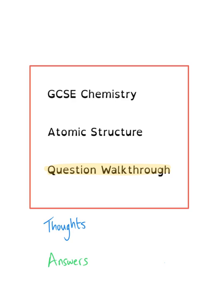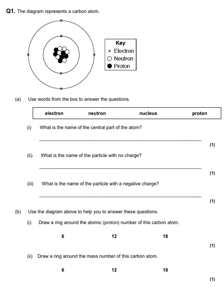So blue for thinking, green for answers. This first question is probably the easiest — they get more difficult as we go through. This question is about the carbon atom, and we've got a diagram with protons, neutrons, and electrons all labelled in their different key. The question asks: what is the name for the central part of the atom? We've got four words to pick from, and that is simply the nucleus.